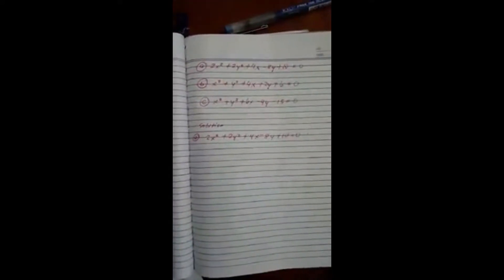Here are some examples. We're going to determine whether the equation is a point, empty set, or circle. Since this problem is divisible by 2, we will divide this equation by 2.